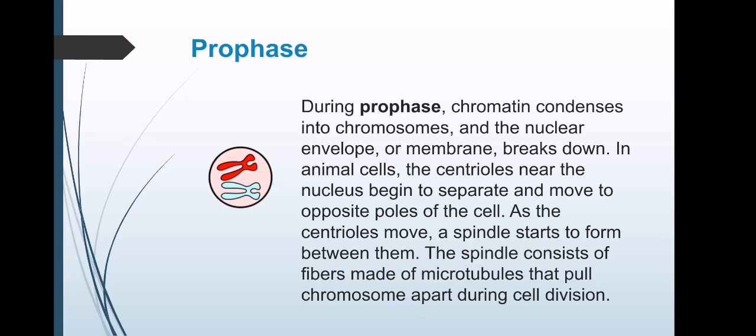Prophase: During prophase, the chromatin condenses and becomes short and thick to form chromosomes. Each chromosome has two sister chromatids joined together at the centromere. The nucleolus disappears and the nuclear membrane starts to break down. The centrosomes, each with a pair of centrioles, move apart to opposite poles, forming a spindle between them.